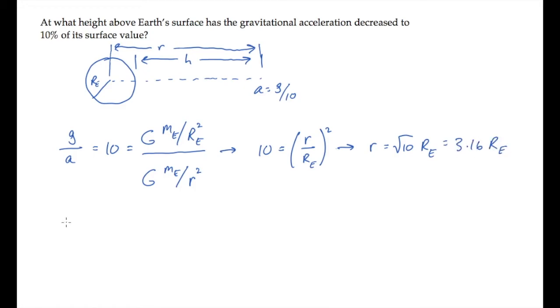But we need to find the distance h. We can find it by noticing that h, our distance above the surface, is little r minus the radius of the Earth.